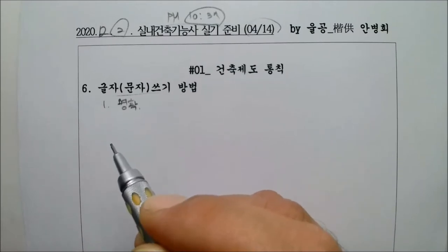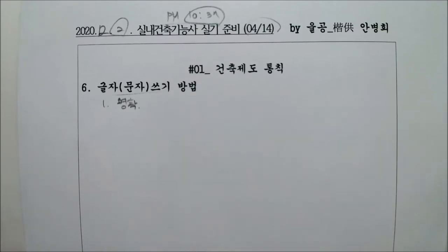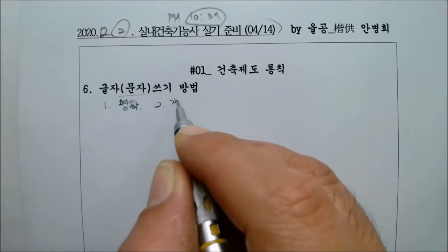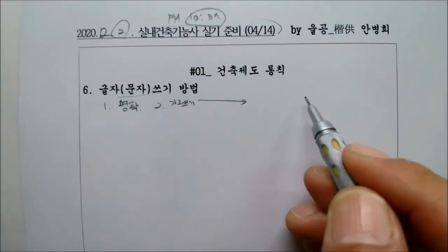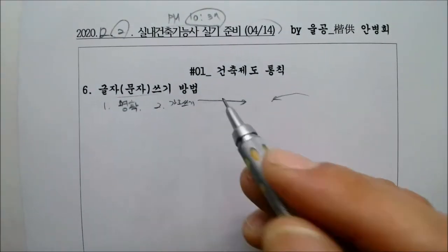선생님이 글자 못씁니다. 근데 여러분들 분명히 제도 글씨는 명확하게 했습니다. 그리고 두번째, 가로쓰기입니다. 우리 일반적으로 이렇게 쓰는 게 가로자, 한글쓰기. 근데 한자는 거꾸로 가죠? 그래서 가로쓰기를 기본으로 한다.